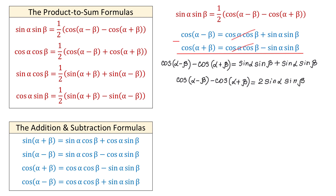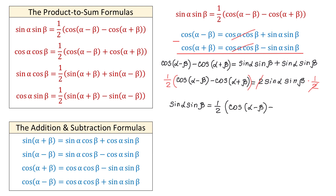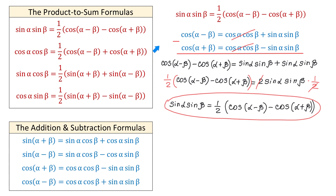In the next step, we will multiply both sides, and then on the right side, two and two will cancel. And now, I will bring down sine of alpha sine of beta, and we will have sine of alpha sine of beta equals one-half, parenthesis, cosine of alpha minus beta minus cosine of alpha plus beta. And this is the formula that we needed.